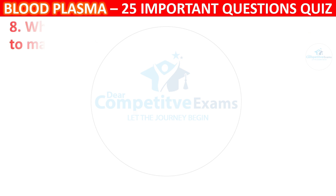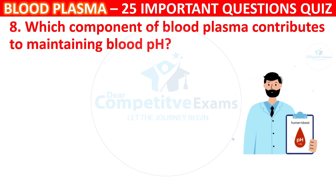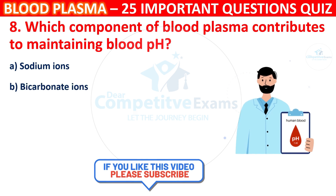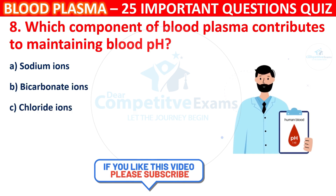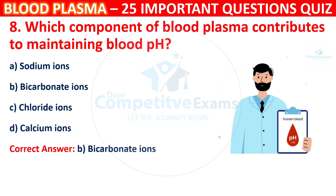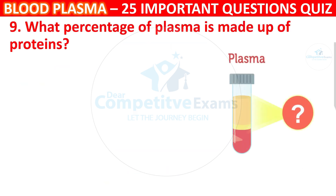Question 8: Which component of Blood Plasma contributes to maintaining blood pH level? Your options are Sodium ions, Bicarbonate ions, Chloride ions, or Calcium ions. The correct answer is B, i.e. Bicarbonate ions. Bicarbonate ions act as a buffer in blood plasma, helping to regulate and maintain the pH balance within a narrow range.